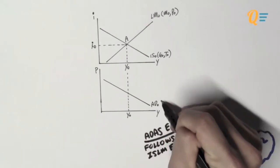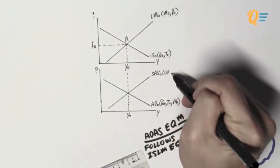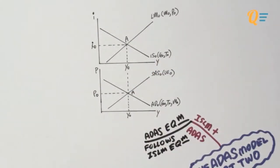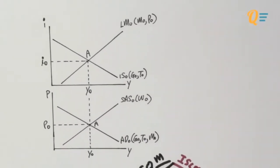So when we draw our AD curve and our AS curve, what happens is that the equilibrium is going to be at point A where the output is Y0 and the price level is P0. Let me zoom in so you can see this better.